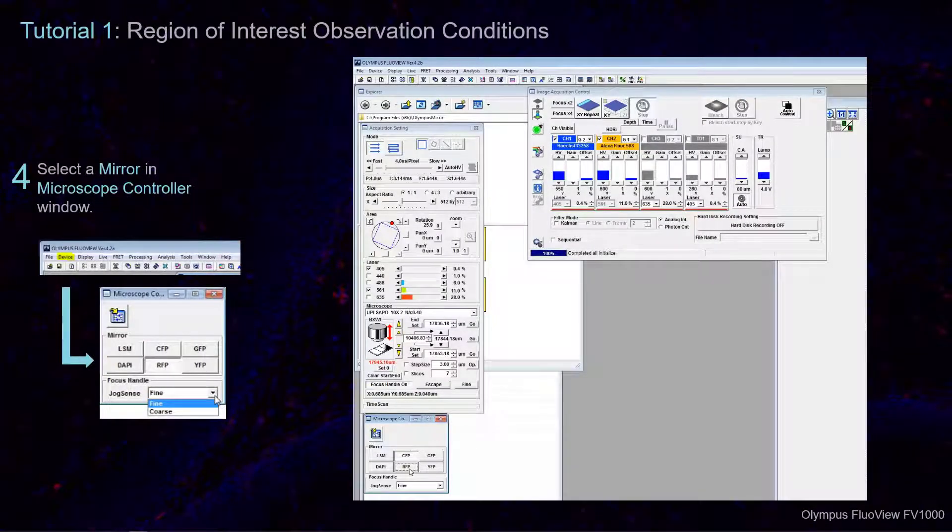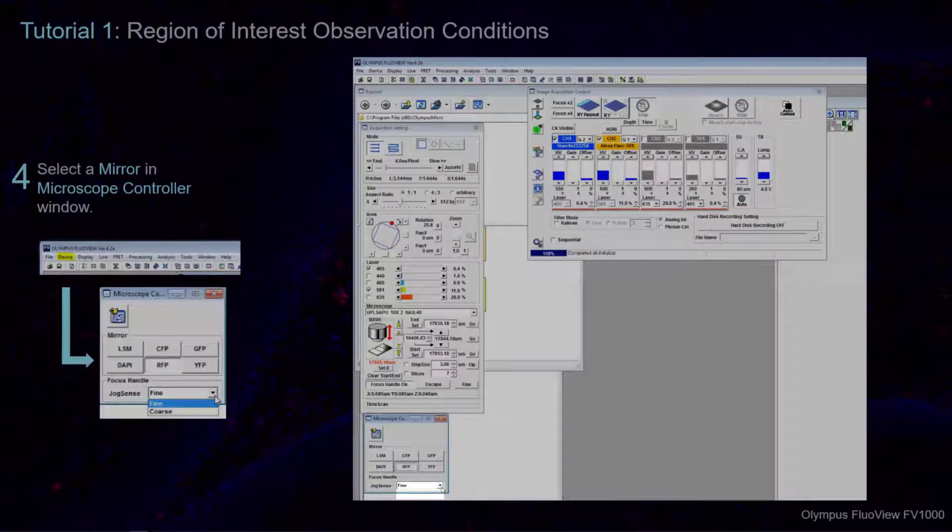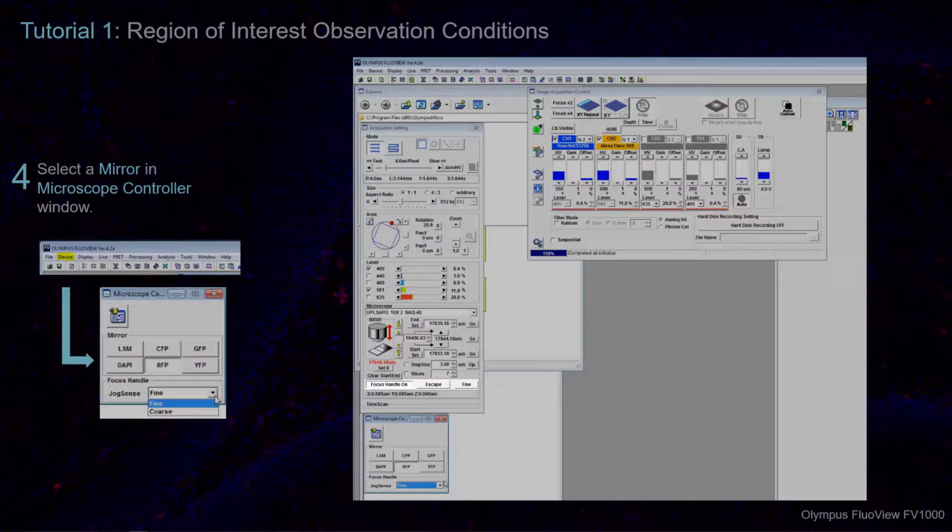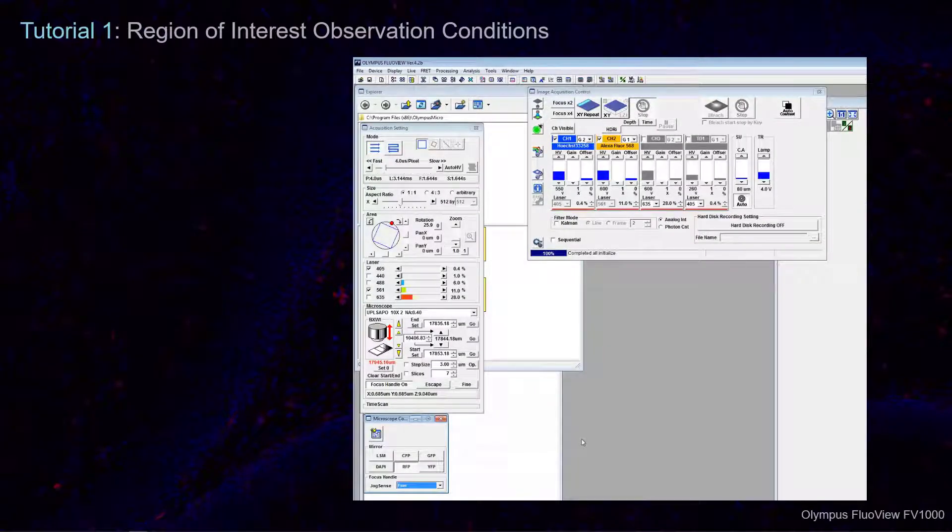Note that the jog sense of the focus handle is set to fine. This can be changed here and also at the bottom of the microscope acquisition setting. Some users prefer to leave this setting unchanged, but it is worth being aware of before using the focus handle to move the microscope stage under greater magnification.